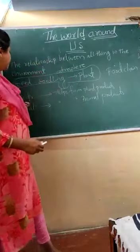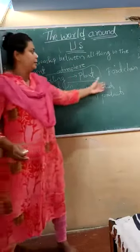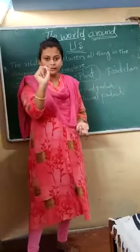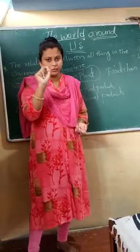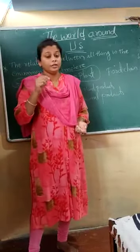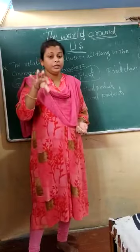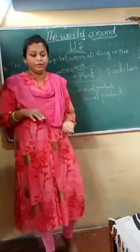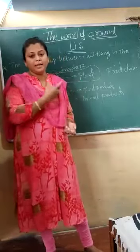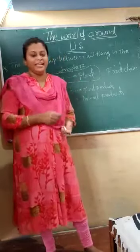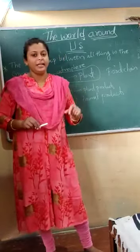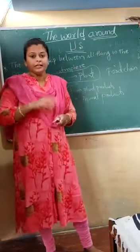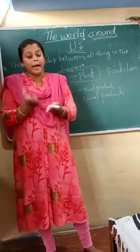We can also see the food chain. A small insect — a grasshopper — will eat grass. A frog or a lizard is going to eat the grasshopper. The frog is eaten by some other animal, that is a snake. And the snake is eaten by the eagle. This is how nature maintains its balance.